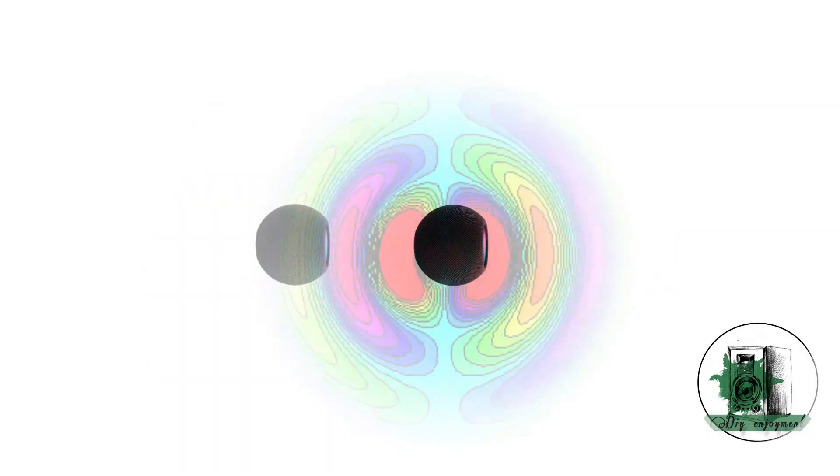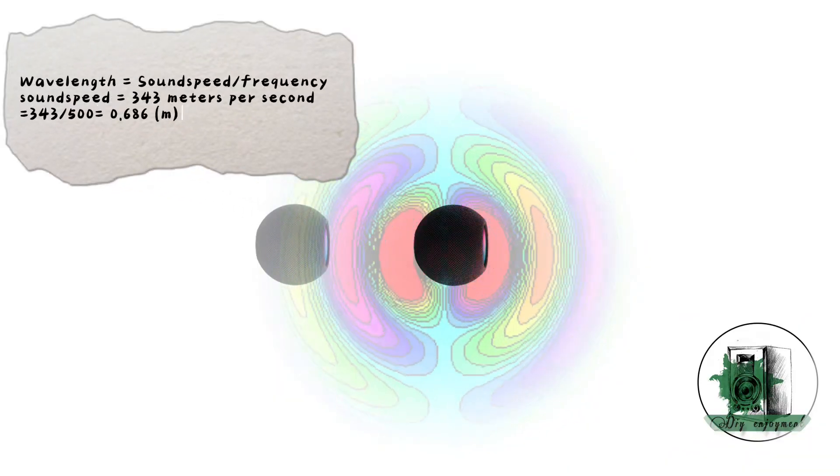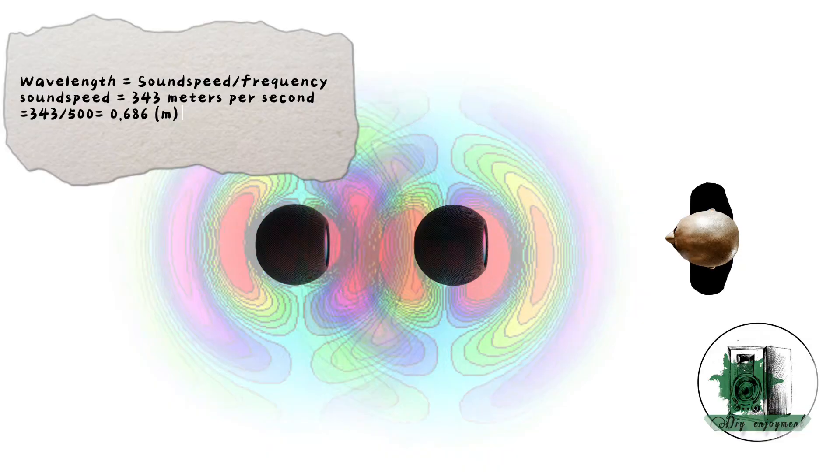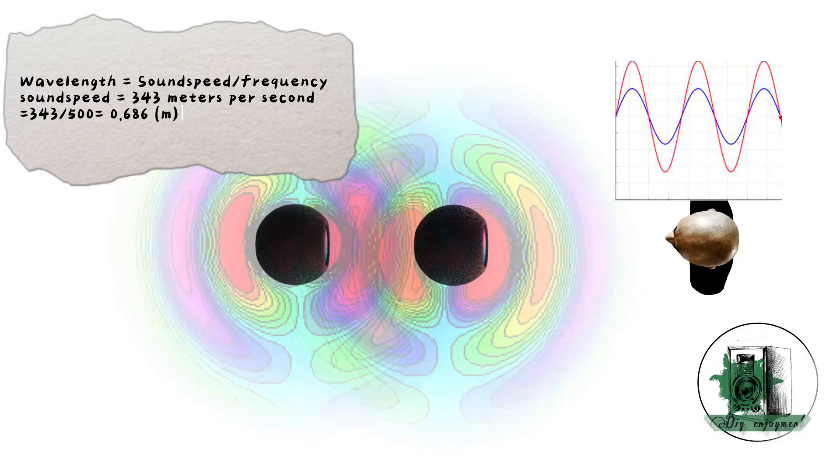At 500 Hz, the wavelength is 0.686 meters. If we place the second driver at a distance of one-quarter of this wavelength from the first, the sound wave produced by the second driver will arrive with a delay equivalent to one-quarter of the wavelength.